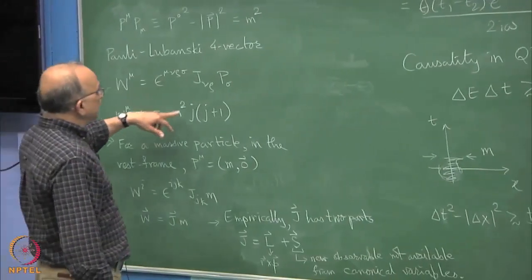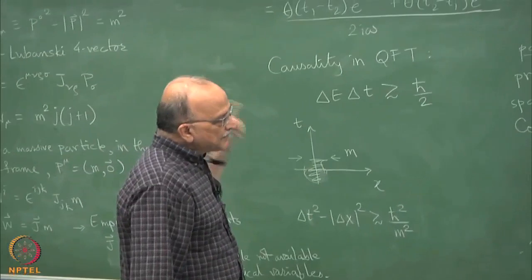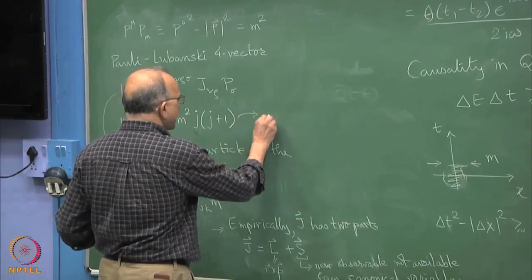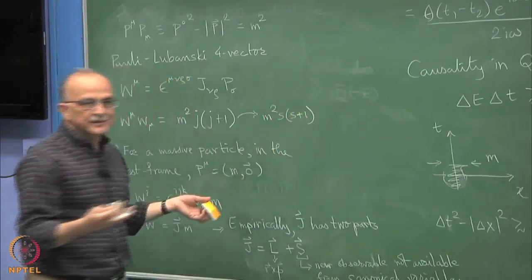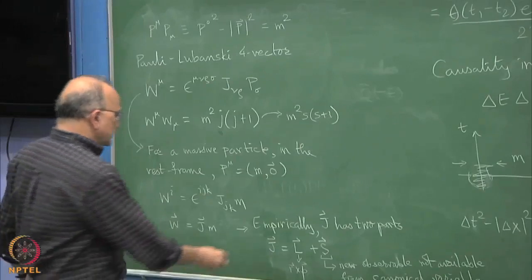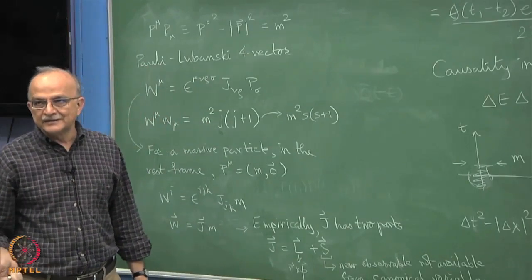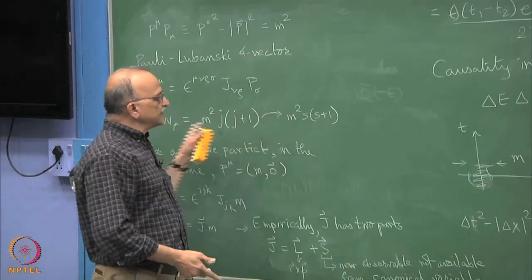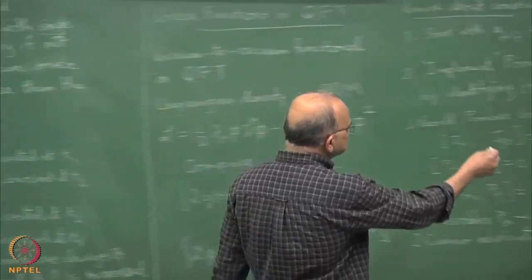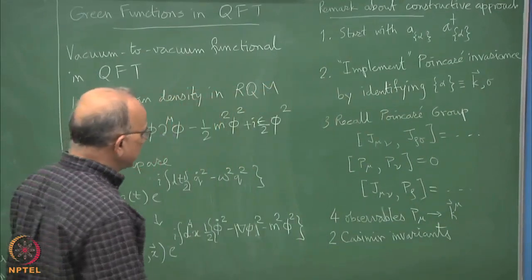The square of this W mu W mu will come out to be m squared times J squared and so that is the other Casimir invariant. You have to take the other Casimir invariant and factor out the m. Whatever this J is in the particle's own rest frame it will of course become just s, only the intrinsic spin will remain. You sit at the location of the particle in its own rest frame there will be no orbital angular momentum. What remains is by definition what is spin.